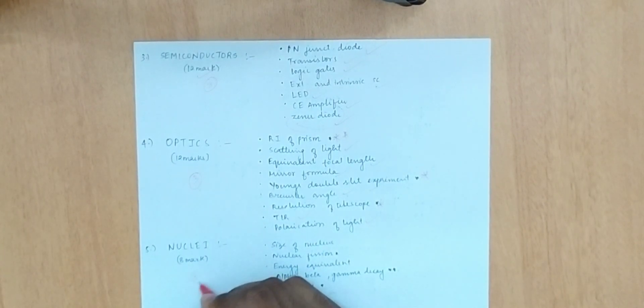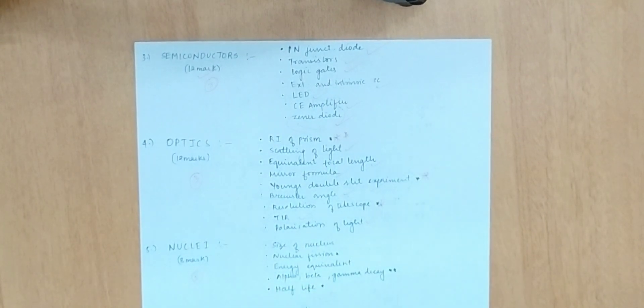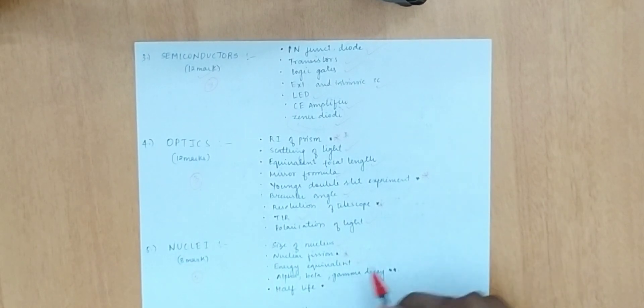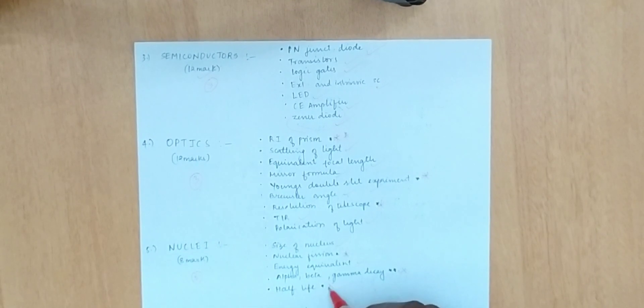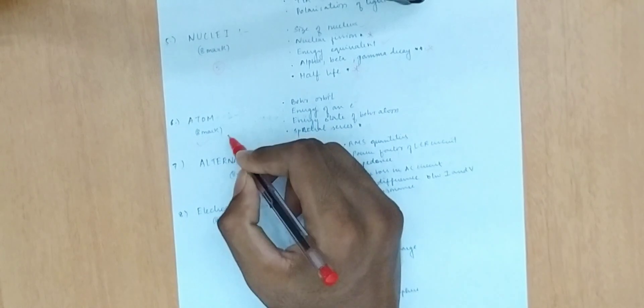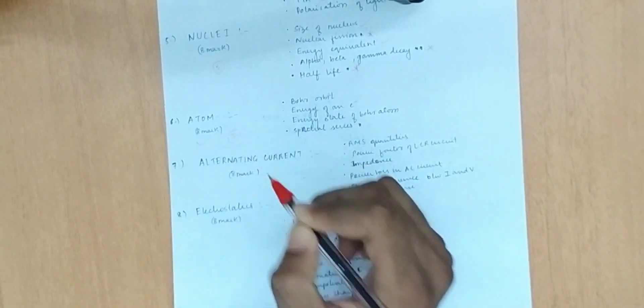For nuclear physics, we expect two questions worth 8 marks. Topics include size of nucleus, nuclear fission, energy equivalence, and alpha, beta, gamma decay. Half-life is very important.